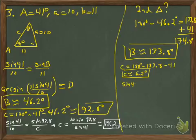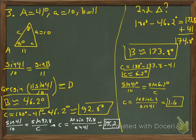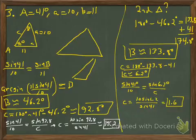For the second triangle, angle B is the supplement — 133.8 degrees — and angle C equals 180 minus 41 minus 133.8, giving a small angle of 6.2 degrees. Using the law of sines: sine of 41 over 10 equals sine of 6.2 over c. Taking reciprocals and multiplying by sine of 6.2 gives side c as approximately 1.6. So we might have a triangle with a very large angle C or one with a very small angle C — two possibilities.